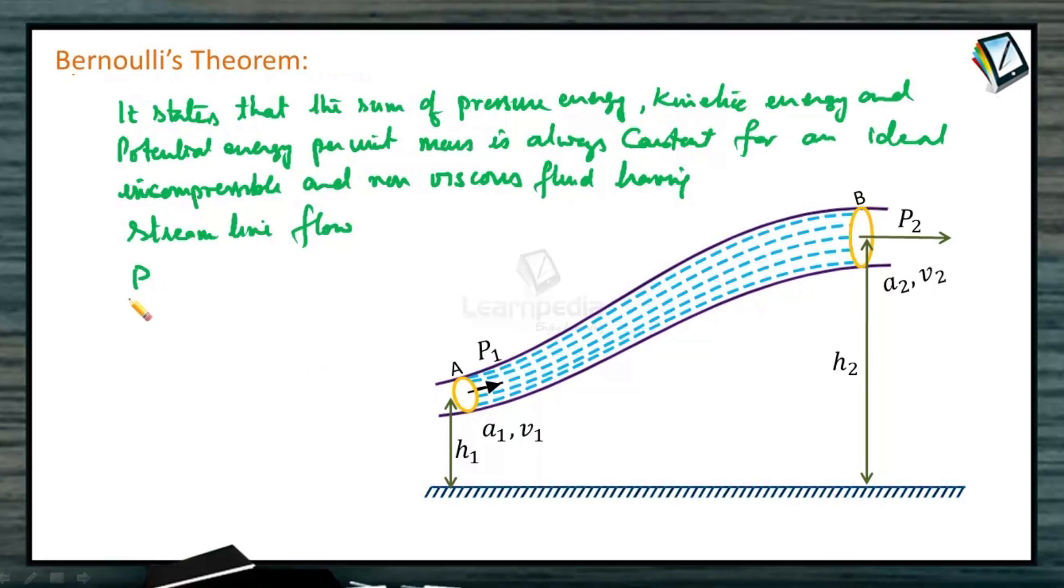That is, at any point, P/ρ (pressure energy per unit mass), kinetic energy per unit mass (½V²), plus potential energy per unit mass